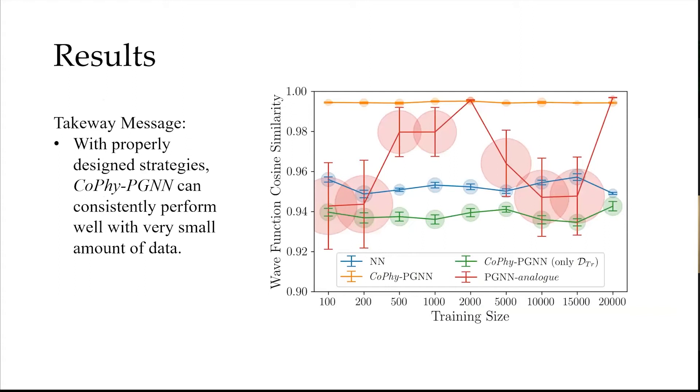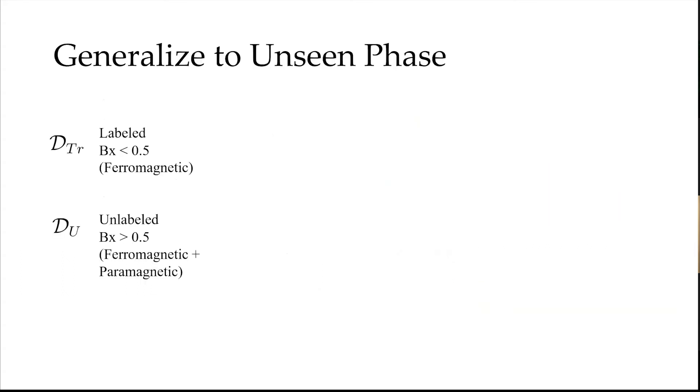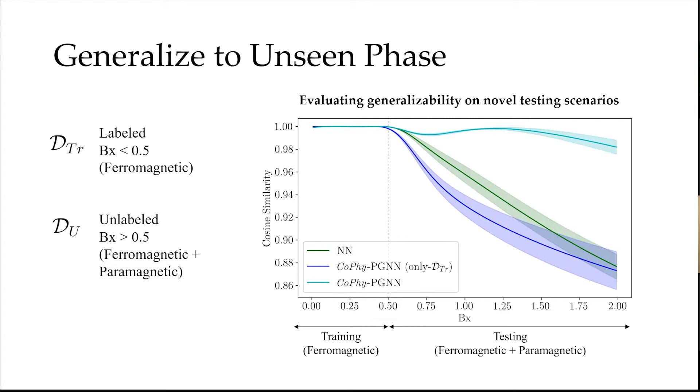This is another example of our CoPhy-PGNN with the baselines. We can see that our CoPhy-PGNN can consistently perform well with very small amount of data as well as it performs very stable across different training sizes. We show that with introducing the physics laws when used correctly, we can generalize to unseen phases. The training phase is only B_x smaller than 0.5, and only CoPhy-PGNN can generalize well to unseen phases. When constructing the PGML framework in an incorrect way, though you're using the correct physics laws, you cannot generalize well into the unseen phases.